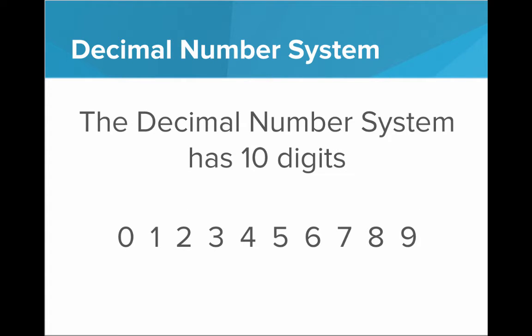For example, let's take the decimal number system. The decimal number system is the number system that we use in our everyday lives, and it has 10 digits, 0 through 9. Now, you're probably already comfortable making numbers in the decimal number system. We have 10 fingers, 10 toes, it's very easy for us to think in terms of 10.